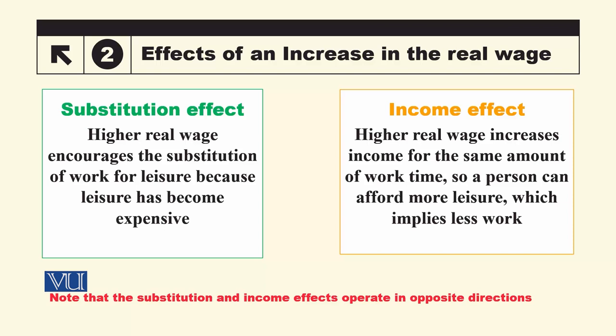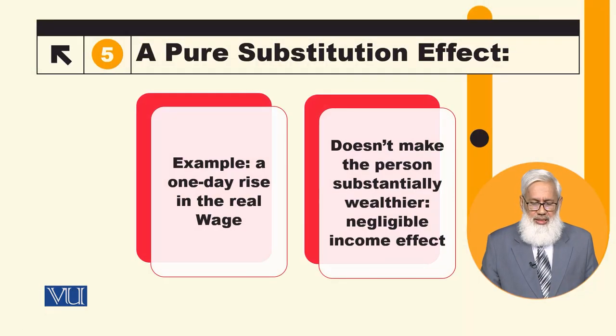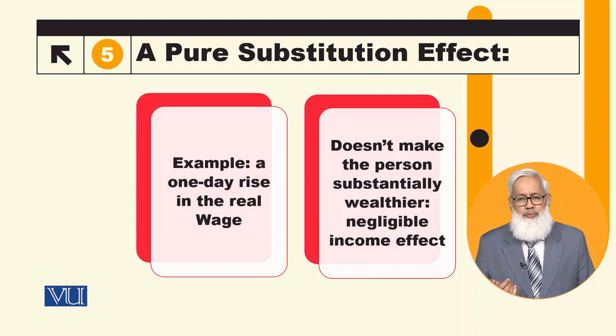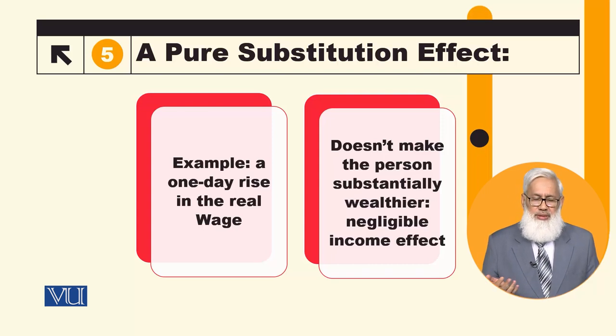So you can understand that real wage increases produce two types of effects: the substitution effect, which is increased, and the income effect, which is also increased. These two opposing and competing effects result from real wage increases. We can first understand each as a pure substitution effect or pure income effect, and then see how they compete with each other to find the net result.